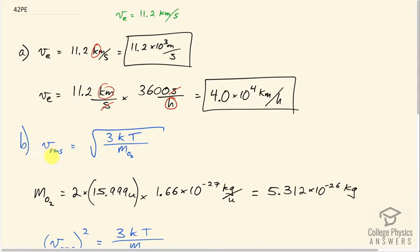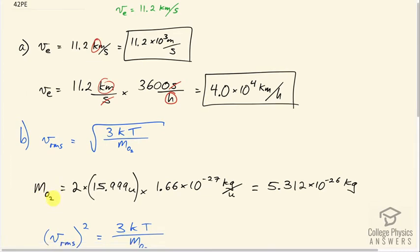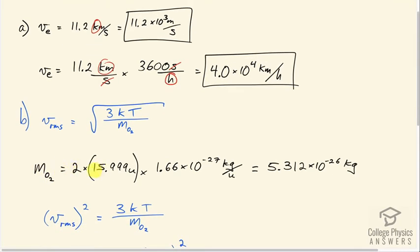Part B asks us, consider an oxygen molecule, what temperature would be needed such that the molecule would have this Vrms? So we need to know what the mass of an oxygen molecule is. So it's going to be 2 times the mass of an atom.